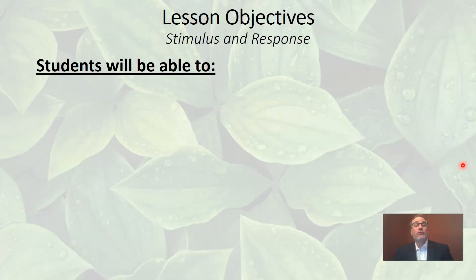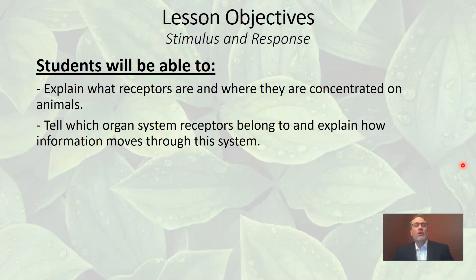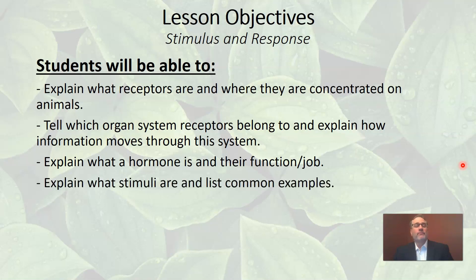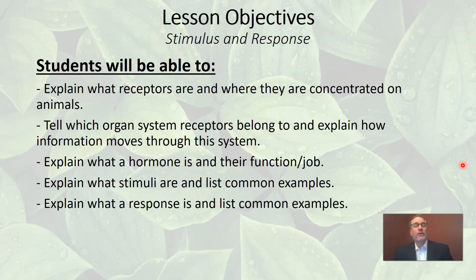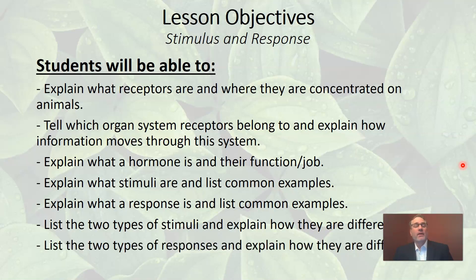Let's take a look at some lesson objectives for today. By the end of today's lesson, you should be able to explain what receptors are and where they are concentrated on animals, tell which organ system receptors belong to, explain how information moves through that system, explain what a hormone is and its function, explain what stimuli are with common examples, explain what a response is with examples, and list two types of stimuli and two types of responses and explain how they differ.